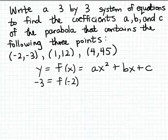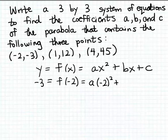If we take -2 and substitute it into our formula using variables a, b, and c for the three coefficients, we end up with a times (-2) squared plus b times (-2) plus c. Notice that gives us an equation containing the unknowns a, b, and c. So we know that a(-2)² + b(-2) + c must be equal to -3.